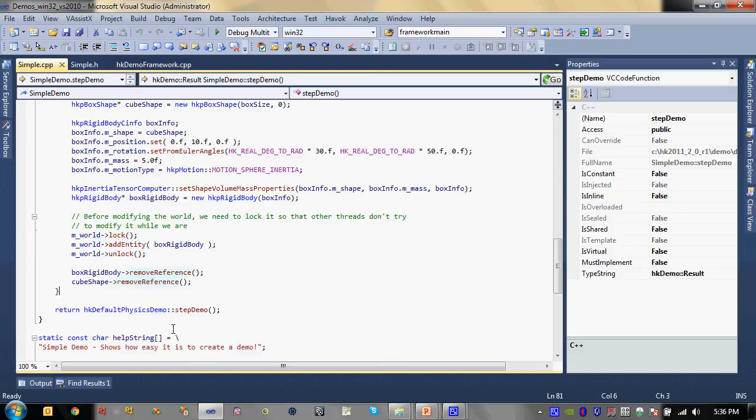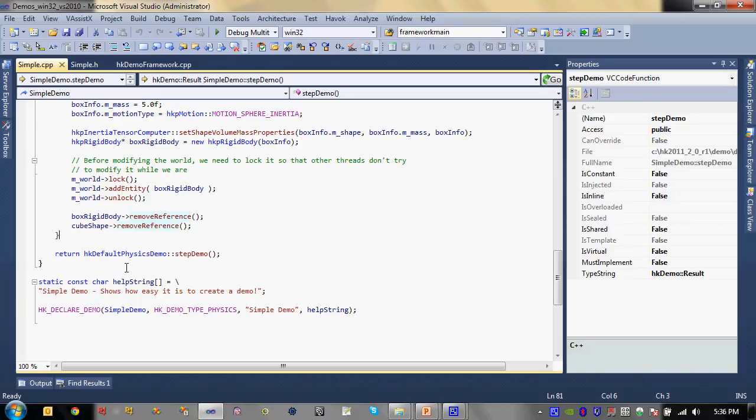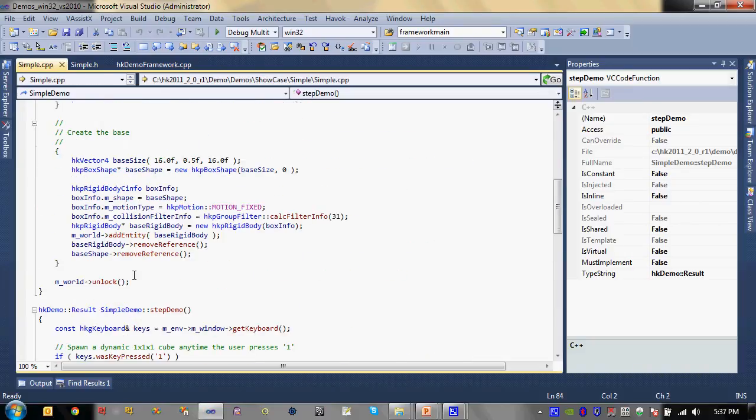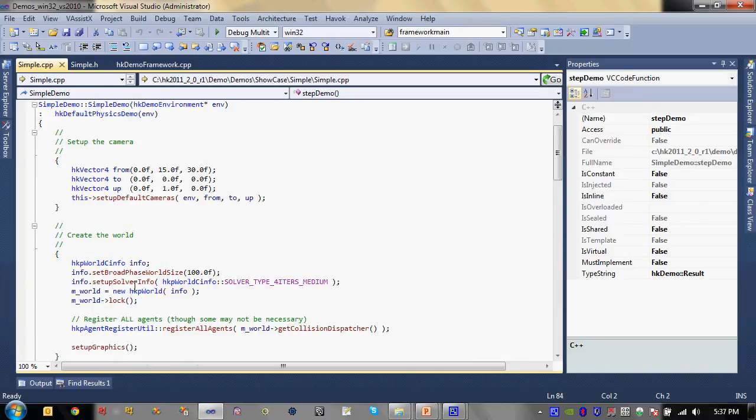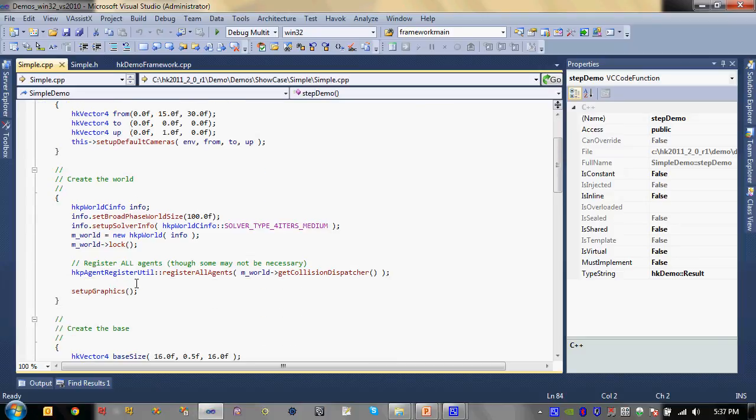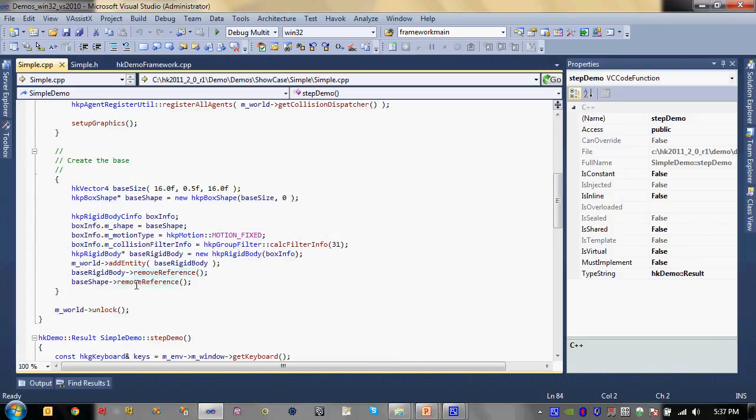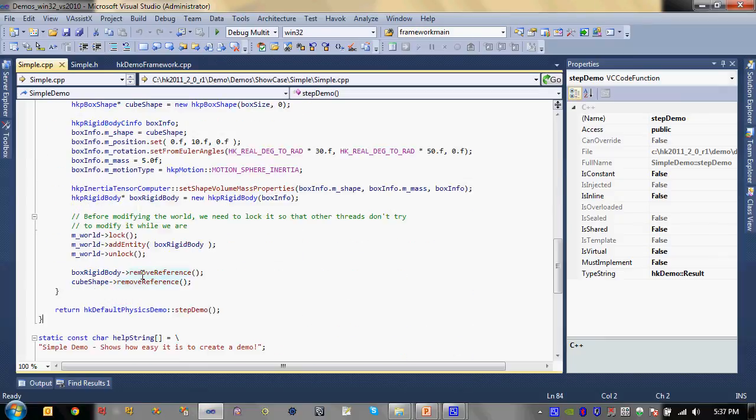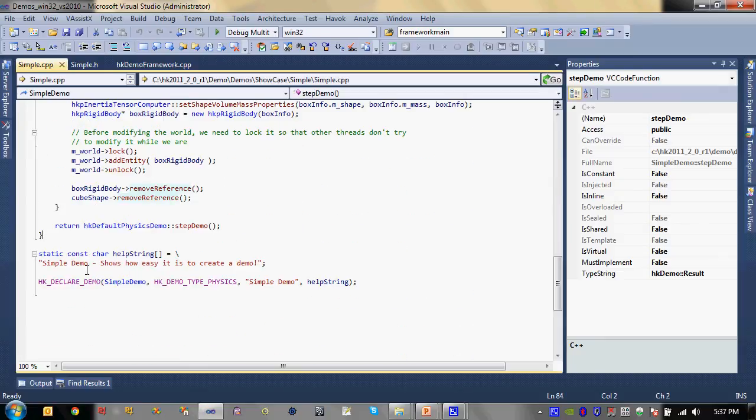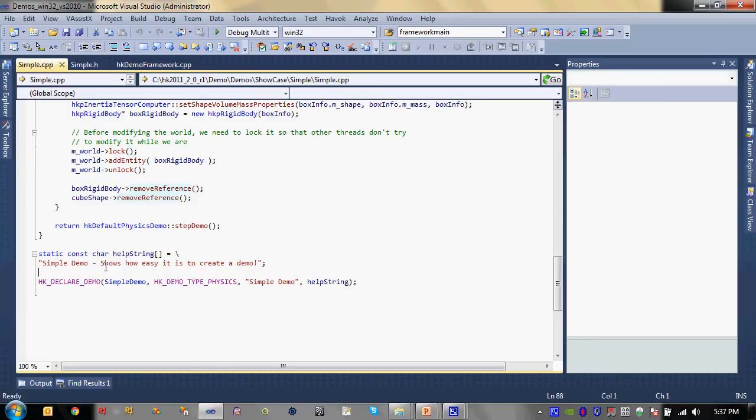So that's it. That's all there is to it. Obviously, there's details on all of these function calls that we'll look at in the future. But it's very simple to get up and running with a simple demo. And finally, before we wrap this up, the one thing that gets our demo to be visible by menu demo is this macro called hk-declare-demo.